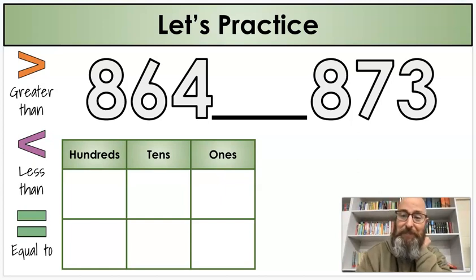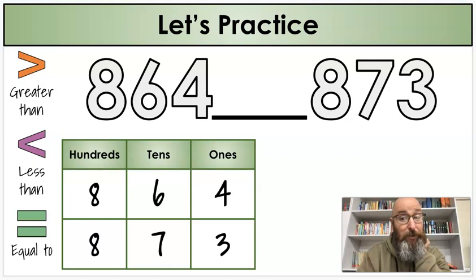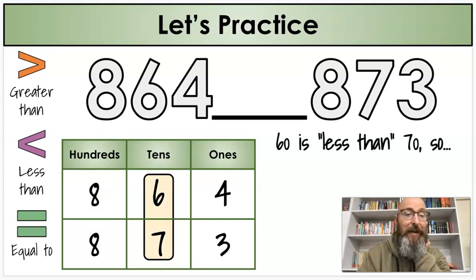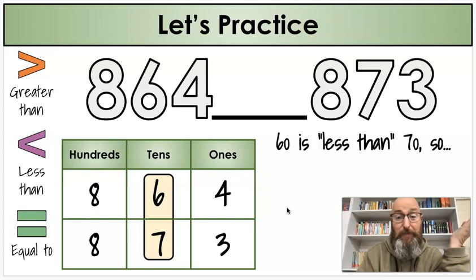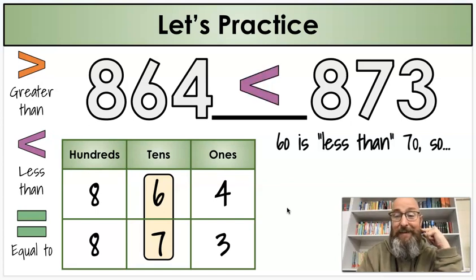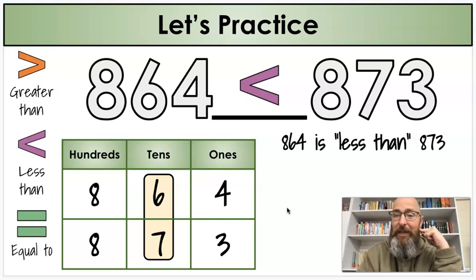Now let's look at this one. What's step one? Write the numbers. What's step two? Compare the largest place. Compare the hundreds. Are the hundreds the same? They are. Whoops. I told you the answer already. I jumped the gun. 60 is less than 70. So which symbol do I use? Less than. Again. So what's my sentence? Eight hundred sixty four is less than 873.